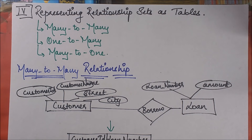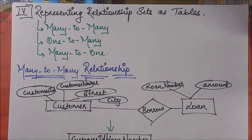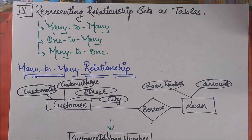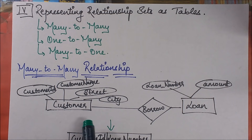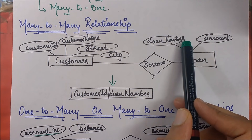Now let's move on to relationships, which are a very important part. We have basically four types of relationships: many-to-many, one-to-many, many-to-one, and one-to-one. In case of one-to-one, we can represent the relationship set using the combination of primary keys from both connecting strong entity sets. For many-to-many relationships, we represent it in the same manner — we take the primary keys of both participating entities, for example customer ID and loan number, as a combination, and this becomes a new table.